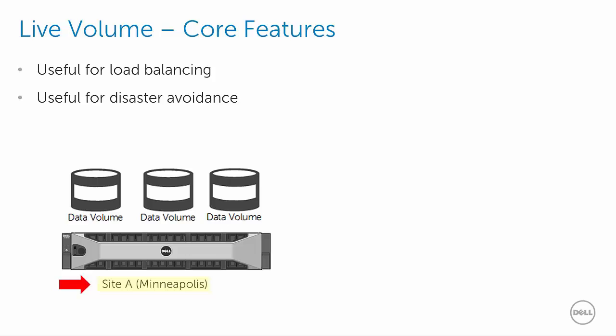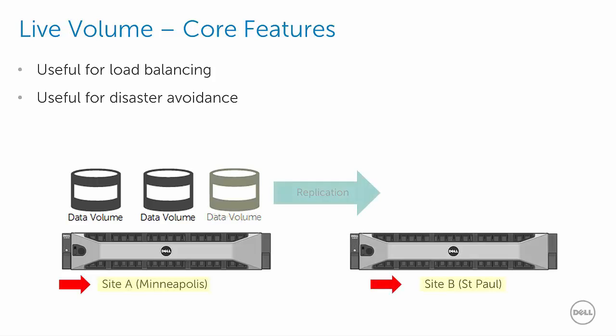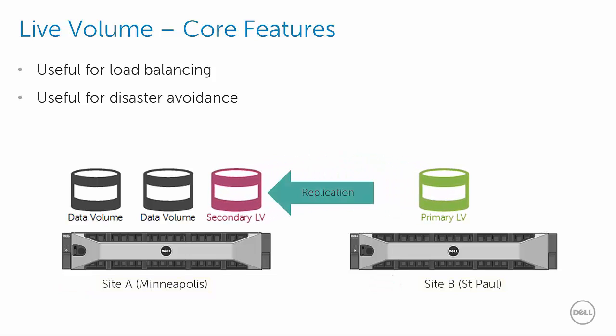Another core feature is the ability to use live volume to move critical workloads to another location given a disaster avoidance situation. Disaster avoidance means being able to plan for and gracefully move critical workloads to another location in advance of a future event that will cause downtime at the primary location, such as a planned power outage, routine maintenance, or even natural occurrences such as an approaching hurricane. In this example, a storage center in Minneapolis needs to be taken offline for planned maintenance. Before the start of the maintenance window, an administrator moves a critical workload to another location in St. Paul by performing a live volume role swap.